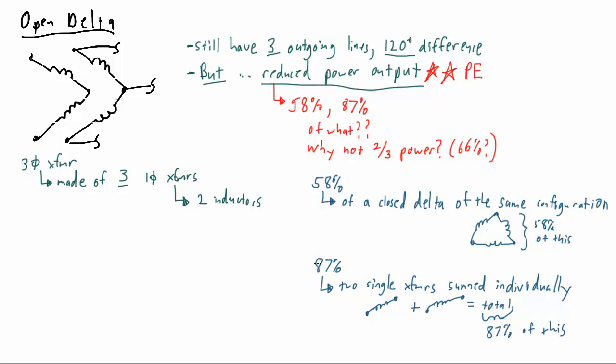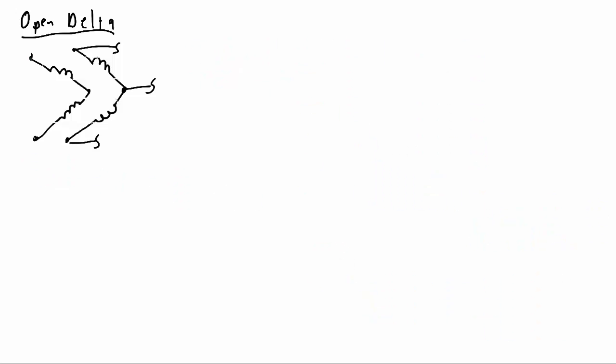Make sure you understand those two percentages and have them ready as a reference for the test because like we said if you are going to be asked an open delta question on the PE most likely you're going to have to bring into your calculations the 58% or the 87%. Now why do we not have that simple two-thirds or 66% power output that would seem to be such an obvious idea for an open delta?